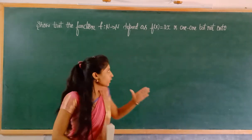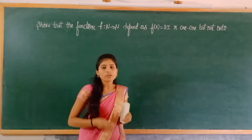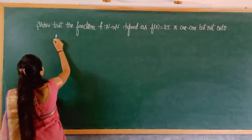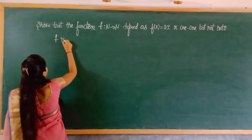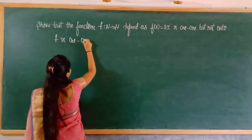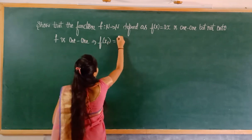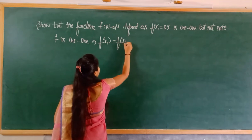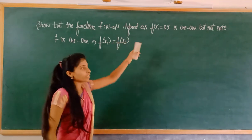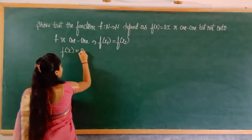We have to show that the given function is one-to-one but not onto. For the one-to-one condition, if f is one-to-one, the condition is: f(x1) = f(x2). The given value of f(x) = 2x.